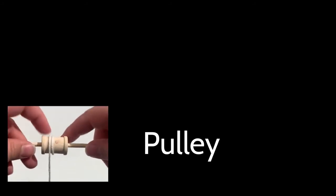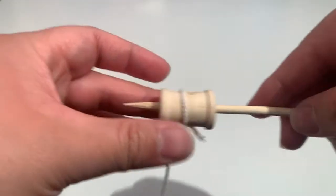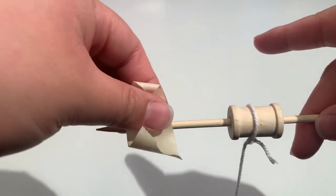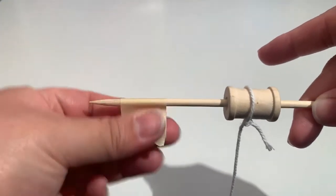A pulley is a wheel with a groove which allows a cord to pass through it. The pulley changes the direction of the force being applied to the cord. A pulley can be used to lift and move heavy objects.